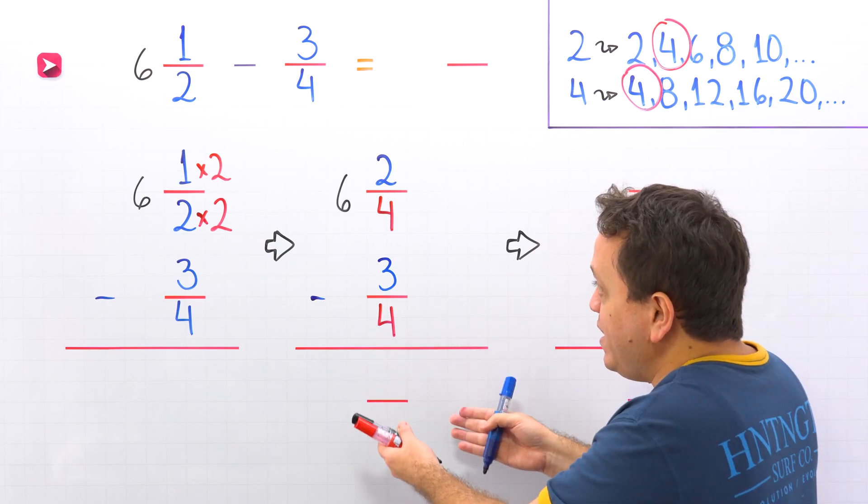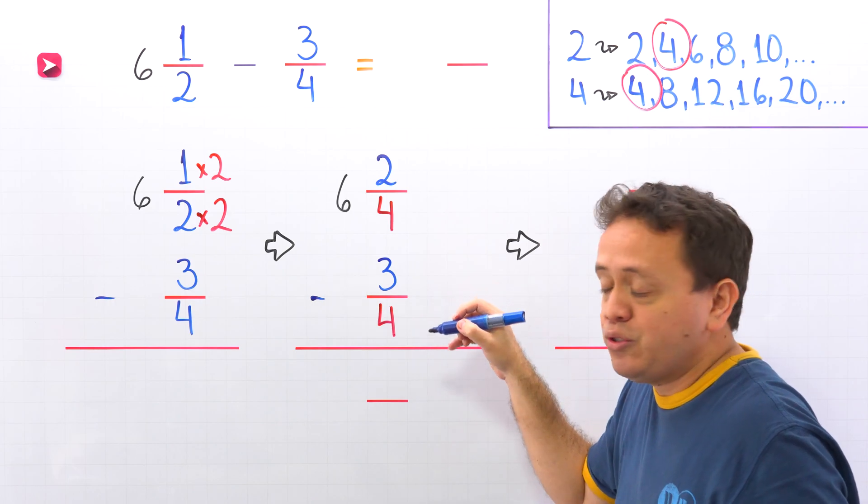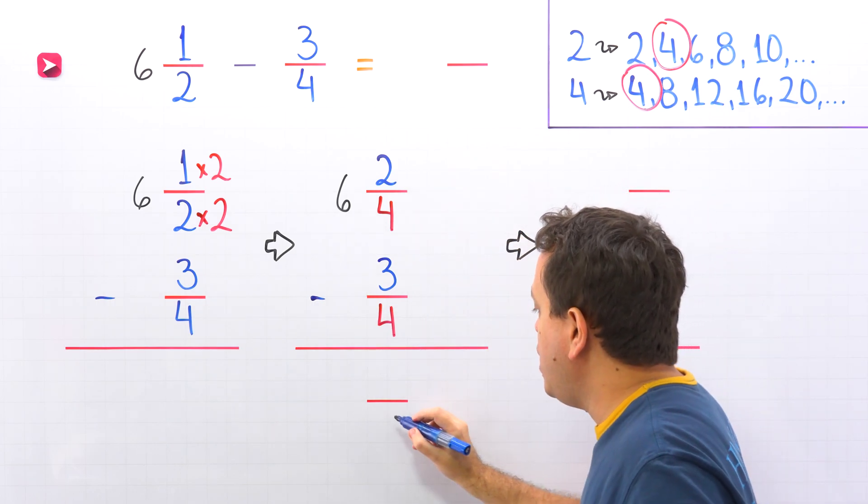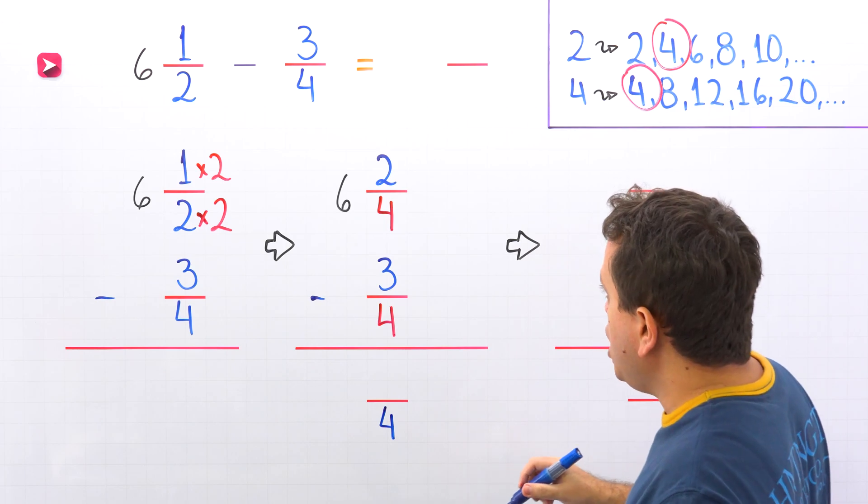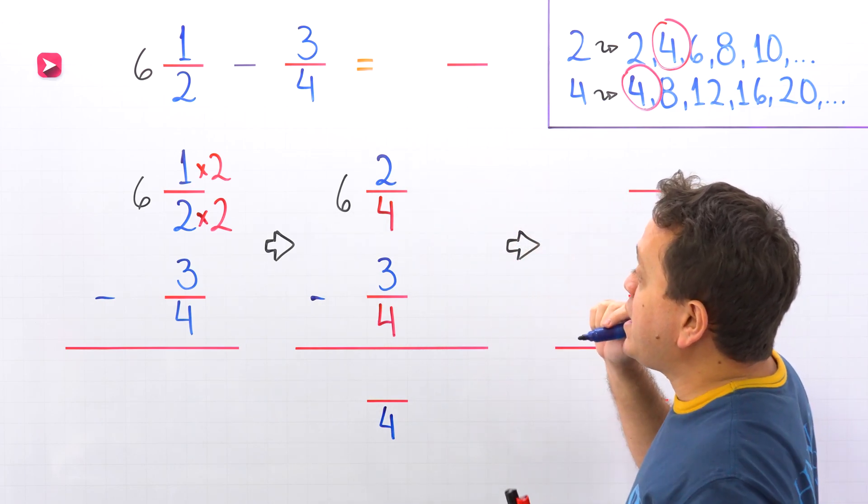Now, once again, to find the difference, we'll start by subtracting the fractions. 2/4 minus 3/4. We have 4 over here, 4 over here. We can put 4 one more time. Yep. These two fractions have the same denominator. And then we subtract the numerators.